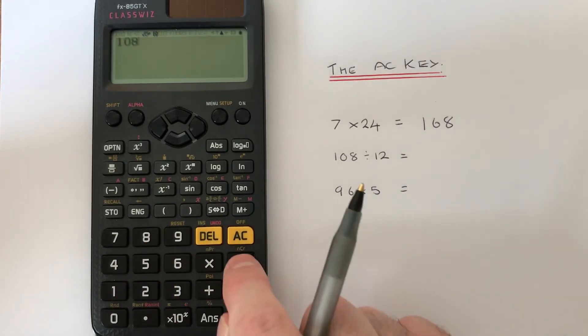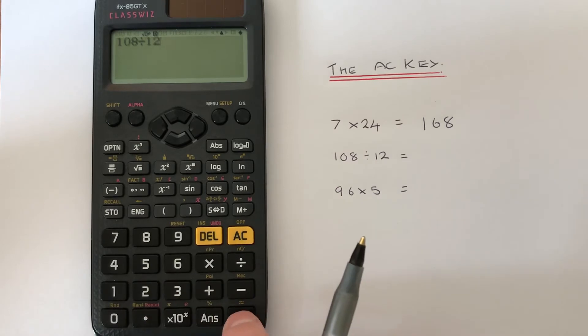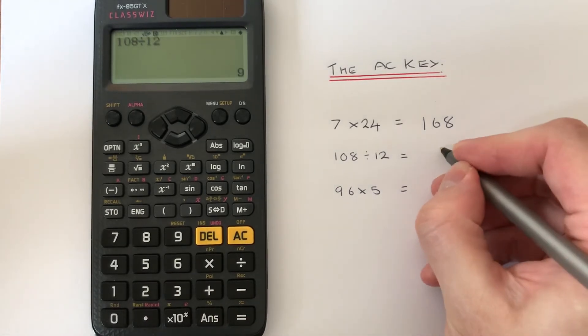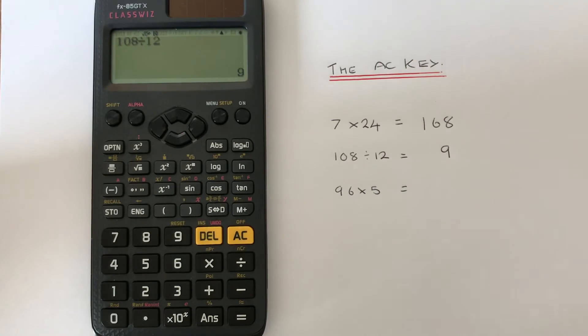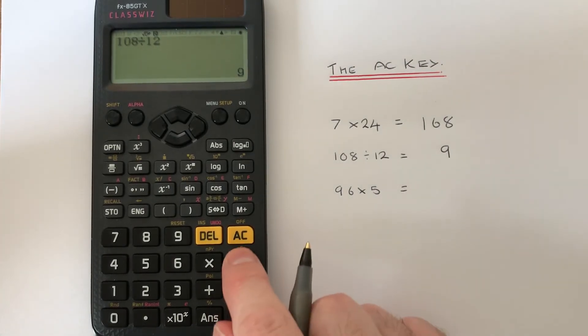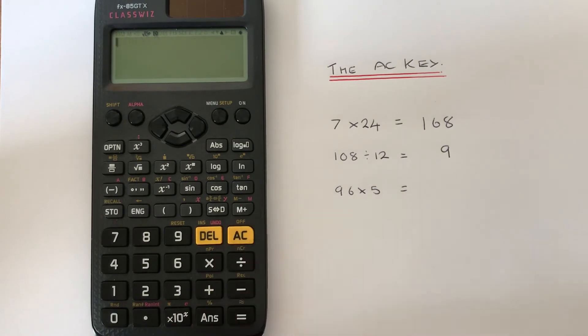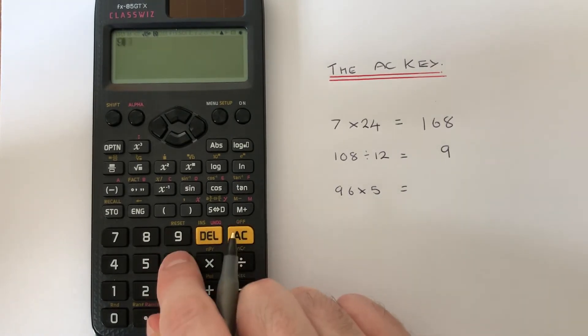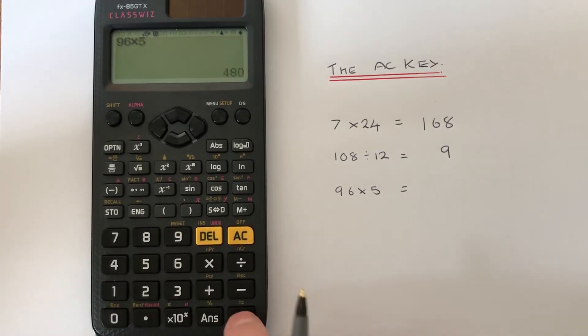Next we've got 108 divided by 12. Press the equals key which gives us 9. Then our final calculation is 96 times 5. If we press the AC key to delete that last one, that gives us 480.